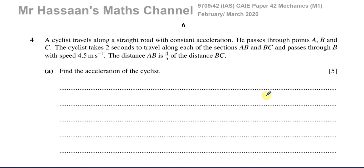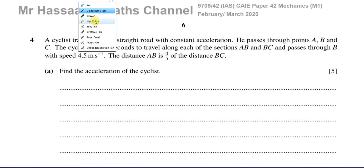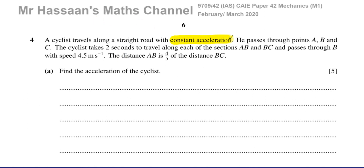It says a cyclist travels along a straight road with constant acceleration. There's a key word here which should trigger in our minds that we're going to be using the equations of constant acceleration — the SUVAT equations. That should be in our head already.